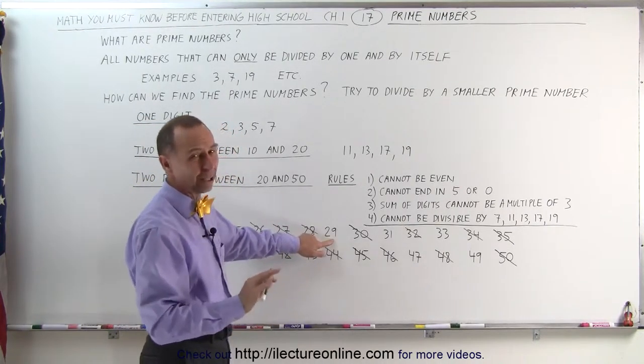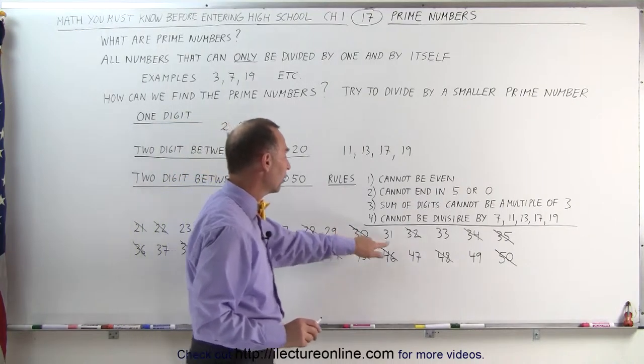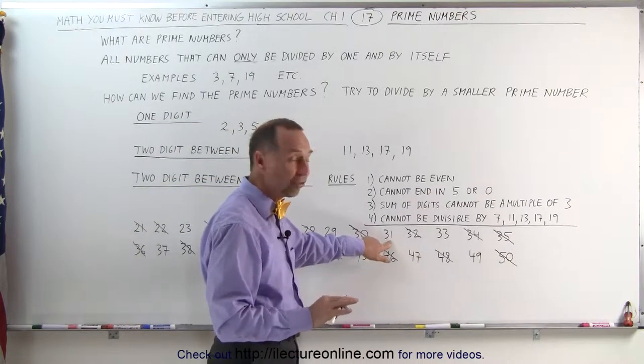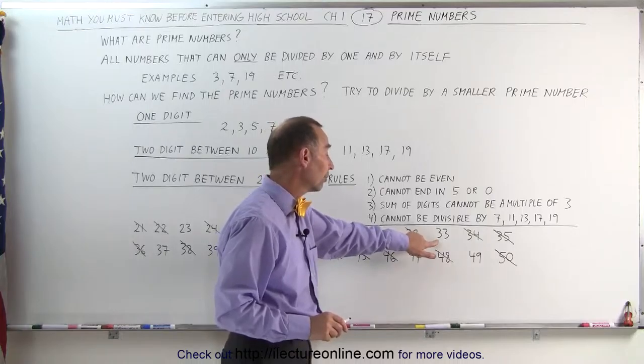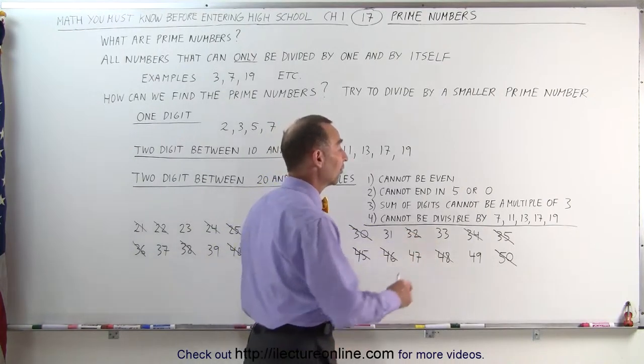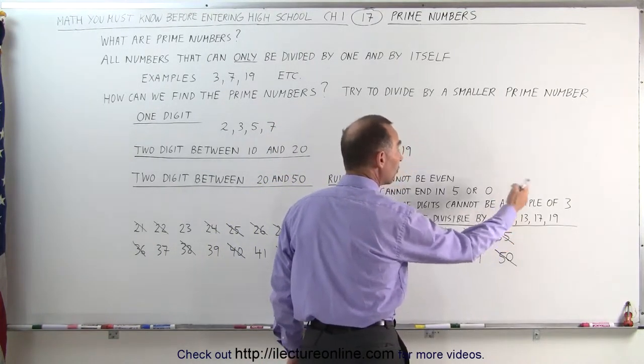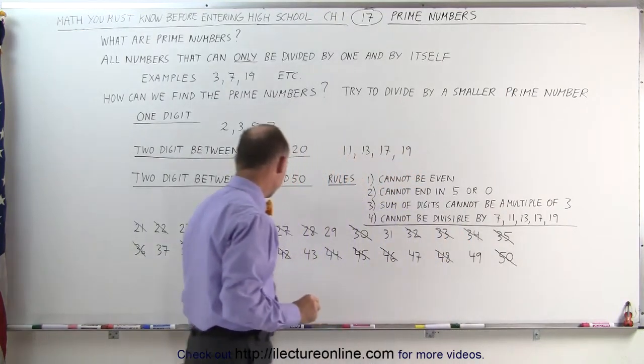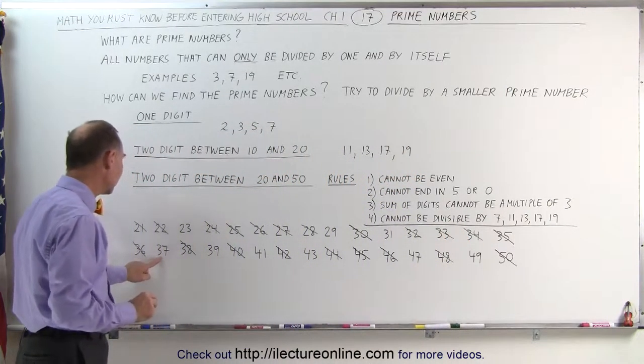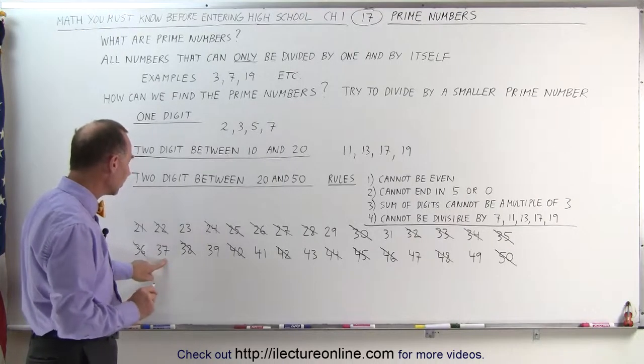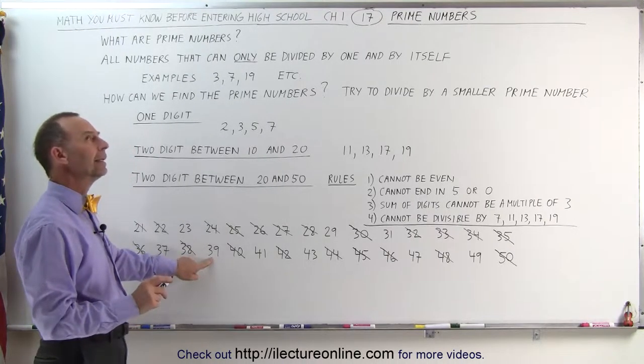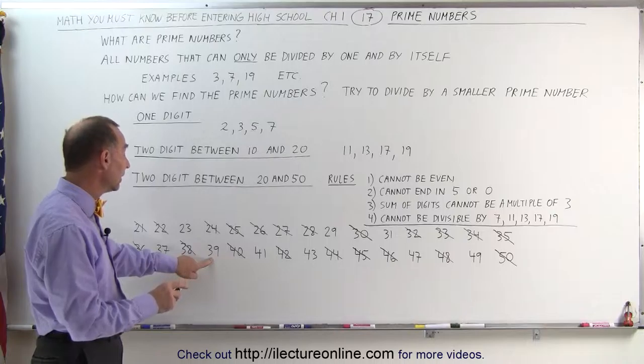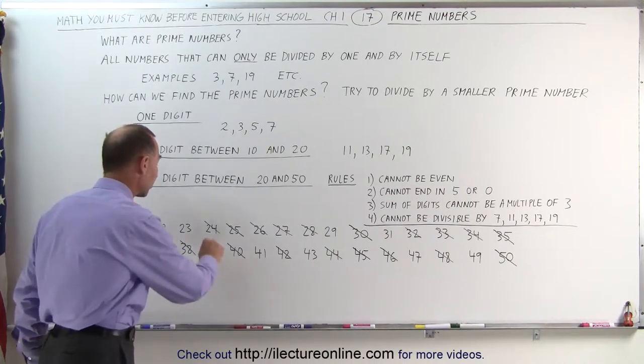2 plus 9 is 11. It's not a multiple of 3. 3 plus 1 is 4. That's not a multiple of 3. 33, well, we know that that's divisible by 11, or it's a multiple of 3 when we add the digits together, so that's not a prime number. 37, 3 plus 7 is 10. It's not a multiple of 3. 39, yes, 3 plus 9, that's 12, which is a multiple of 3. Not a prime number.